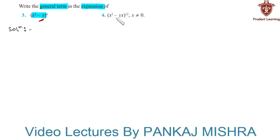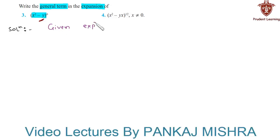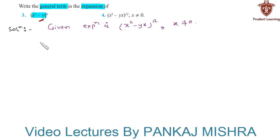Next, we have to find the general term in the expansion of (x² - y/x)¹², where x is not equal to 0. The given expression is (x² - y/x)¹², where x ≠ 0.